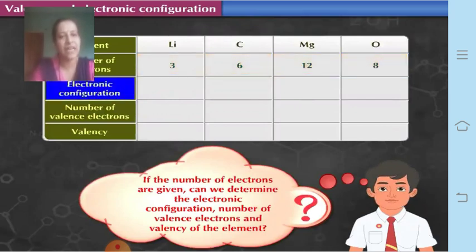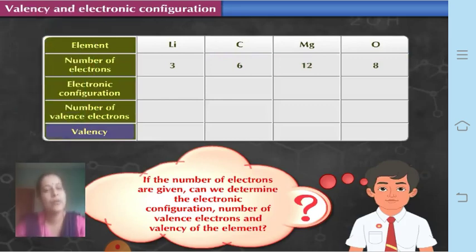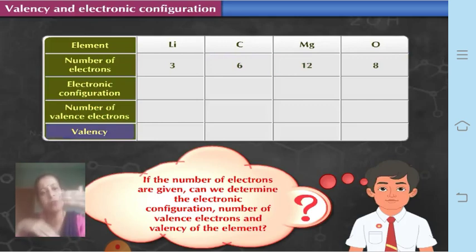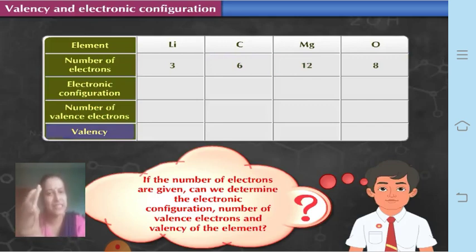If the number of electrons is given, can we determine the electronic configuration, number of valence electrons, and the valency of the element? Yes — if the number of electrons is given, we can find all these things using the formula 2n², which tells us how many electrons are accommodated in each shell. Knowing the shell number, we can determine the electronic configuration, the number of valence electrons, and the valency.